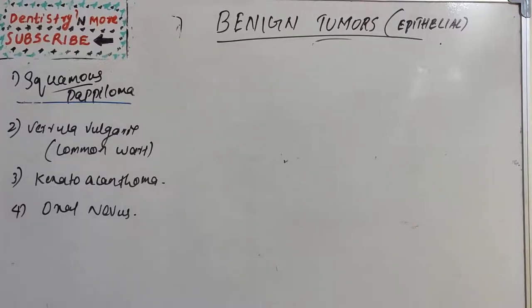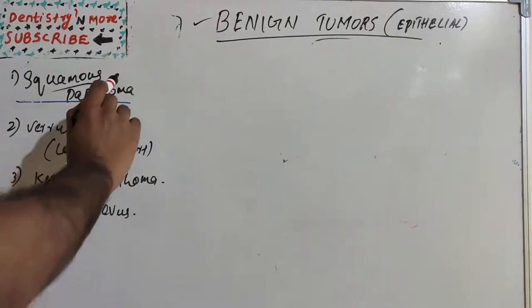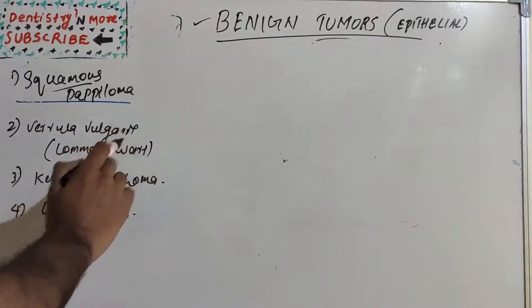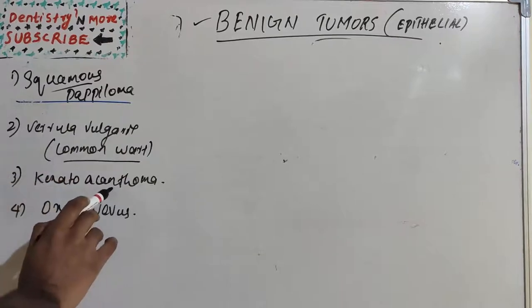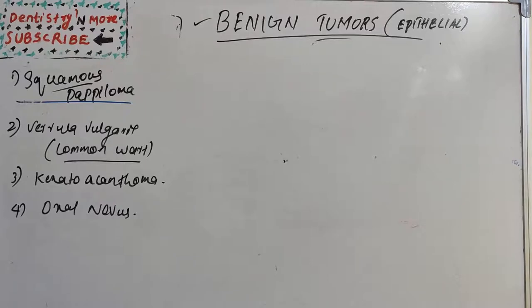Hello everyone, welcome back to another session in dentistry and more. Today we have benign tumors — specifically, we are studying the most common benign tumors: squamous papilloma, verruca vulgaris (also known as common wart), keratoacanthoma, and oral nevus. A tumor is essentially a swelling of tissue; if we apply a very strict protocol, we cannot say it is a neoplastic process, but sometimes we interchangeably use tumor and neoplasm.